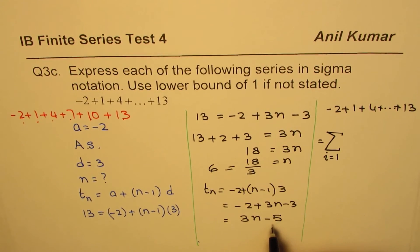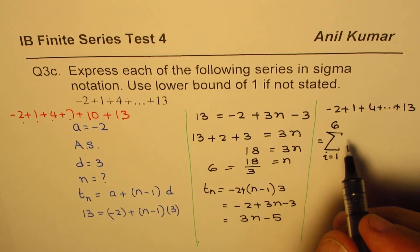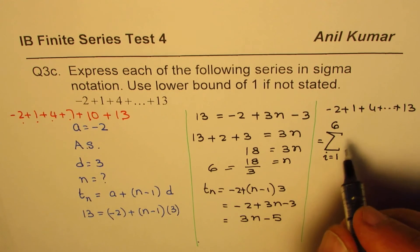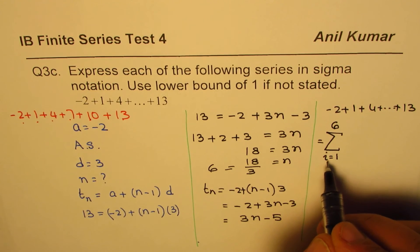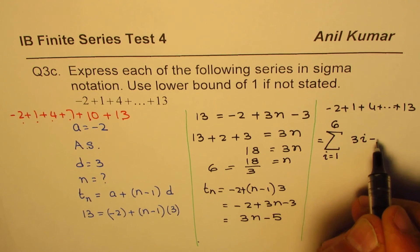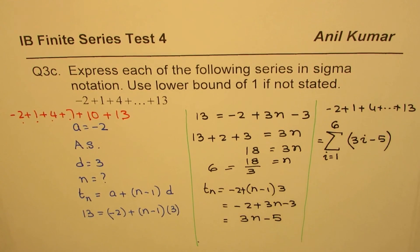We know total number of terms is 6, so 1 to 6. And now for the general term, we'll write i since we are taking i as a variable here. So it would be 3i - 5. That is how you can write this arithmetic series in terms of sigma notation.